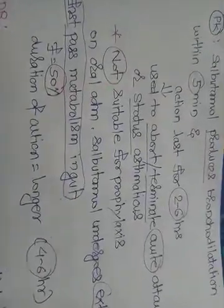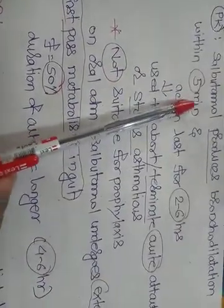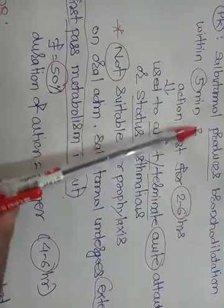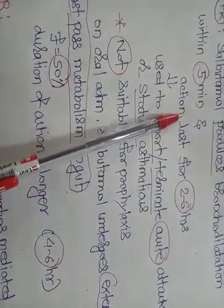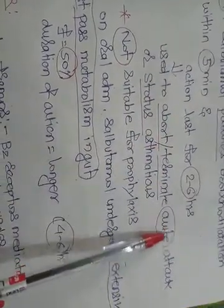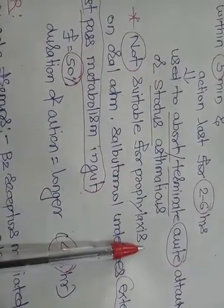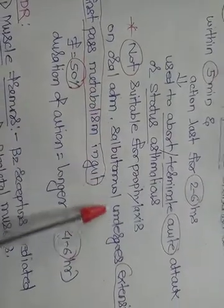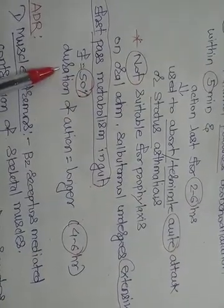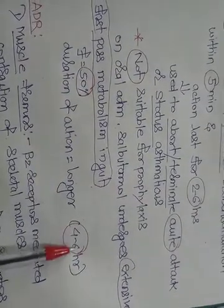Regarding pharmacokinetic properties: salbutamol produces bronchodilation within 5 minutes when given via the inhalational route, meaning onset of action is very fast. Action lasts for 2 to 6 hours. It is used to abort or terminate the acute attack of asthma or status asthmaticus, and is not suitable for prophylaxis or chronic asthma. On oral administration, salbutamol undergoes extensive first-pass metabolism in the gut; oral bioavailability is 50%, but duration of action is longer at 4 to 6 hours.